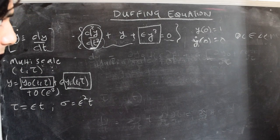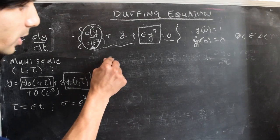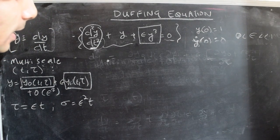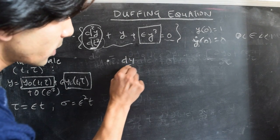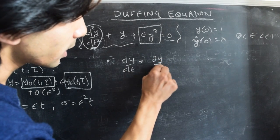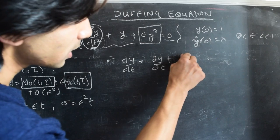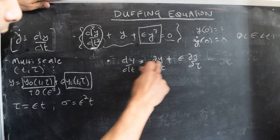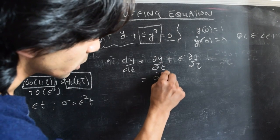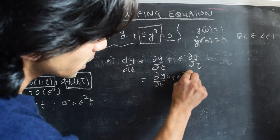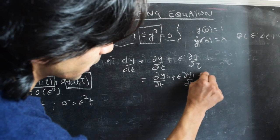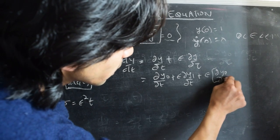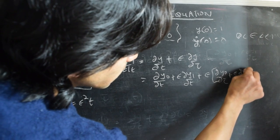Let's now formally see how to do that. If we plug this expansion into the expression, we need to calculate the second derivative of y with respect to t. The first derivative of y with respect to t, as calculated in the previous video, involves the partial derivative with respect to t plus ε times the partial derivative with respect to τ. Plugging in y = y0 + ε·y1, we get: dy0/dt + ε·dy1/dt + ε·(dy0/dτ + ε·dy1/dτ).